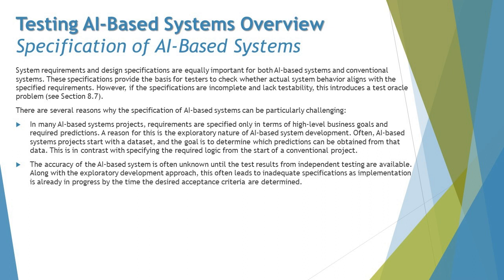The definition of specification comes from the fundamentals of being an engineer: specifications are the requirements — anything that provides a basis for testing. It could be a requirement, a design, or any information a tester can use to derive test cases. System requirements and design specifications are equally important for both AI-based systems and conventional systems, providing the basis for a tester to check whether actual system behavior aligns with specified requirements.